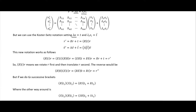We set lambda*A equal to T. In vector form it's the sum of lambda_i * E_i, which we map to a vector T. We then use these circle brackets where we put our rotation in the first slot and the translation in the second slot — this is the Koster-Seitz notation.